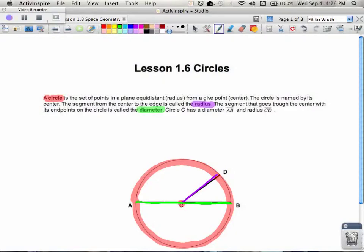So a circle is the set of points in a plane, equidistant, which is called the radius, from a given point called the center. The circle is named by the center, so this circle will be called circle C. The segment from the center to the edge is called the radius, and the segment that goes through the center with its endpoints on the circle is called the diameter. So this circle C has a diameter of AB and a radius of CD.